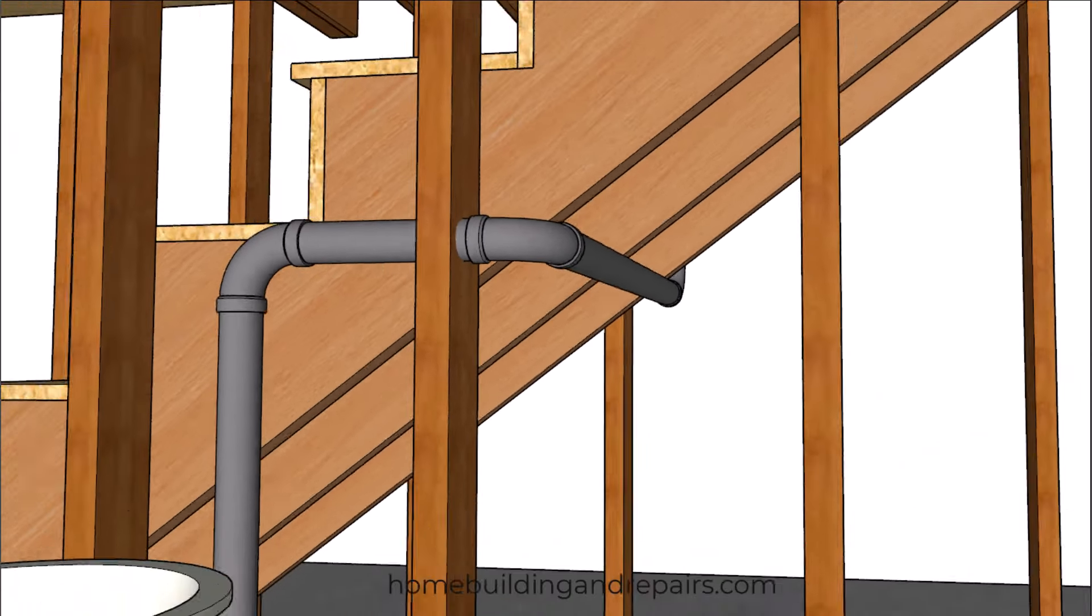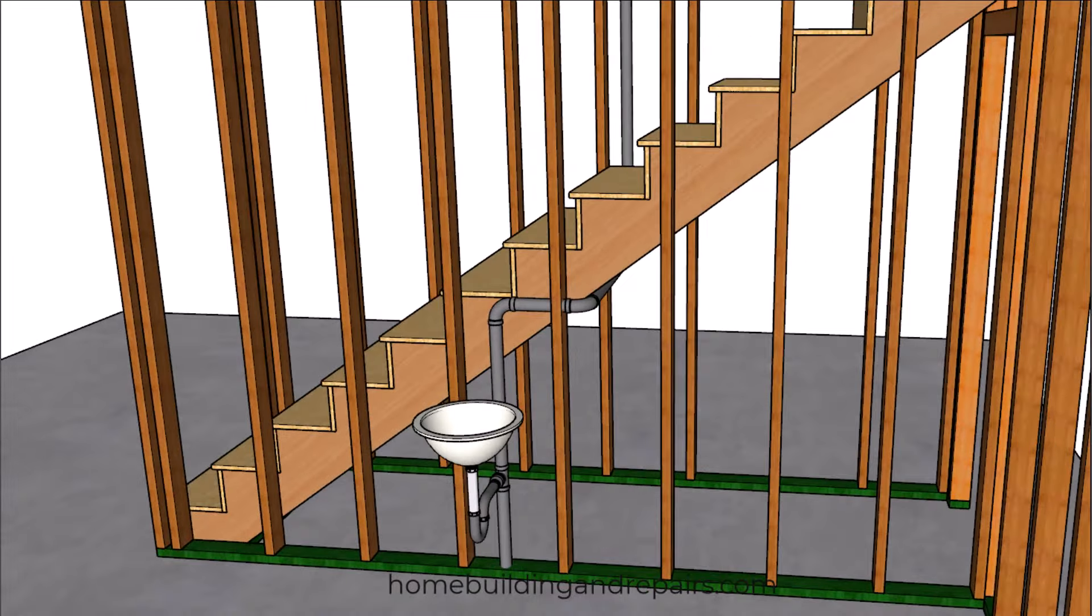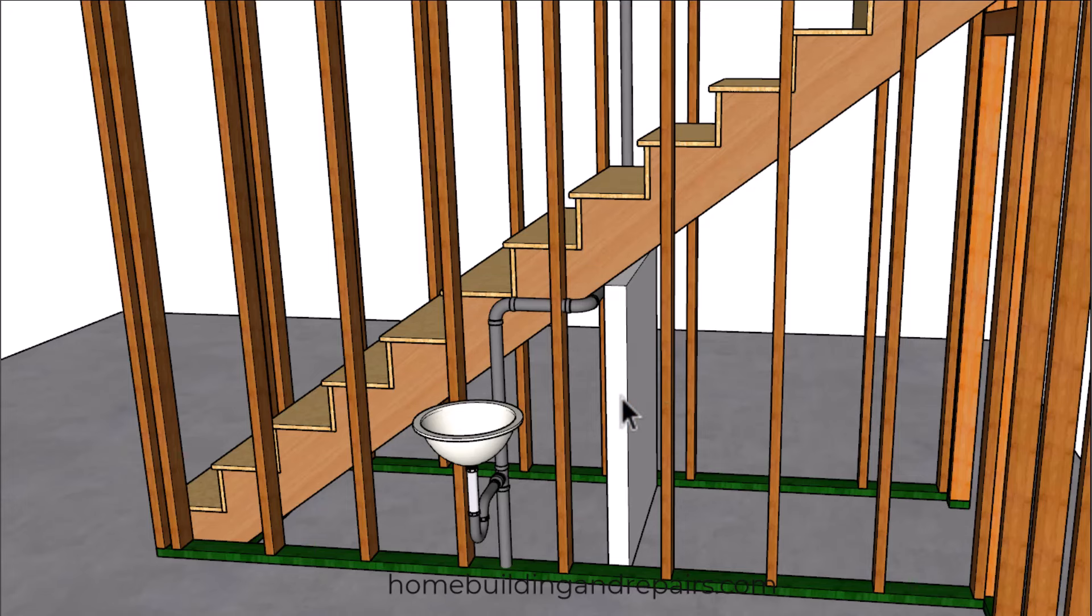Sometimes you're going to need to do a little more planning. Now another thing you can do will be to install a wall in front of the plumbing pipe like we've done here. However this will be making the closet a little smaller.